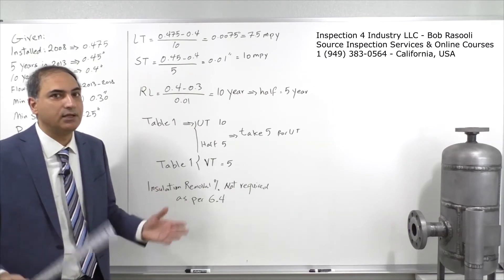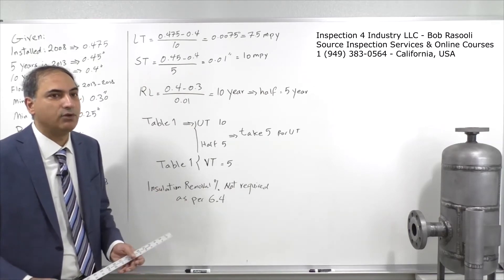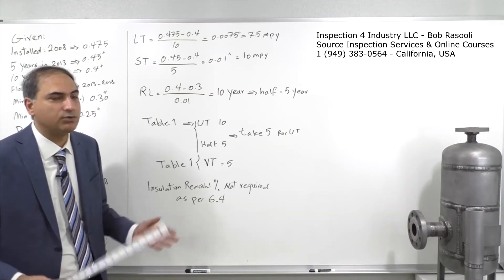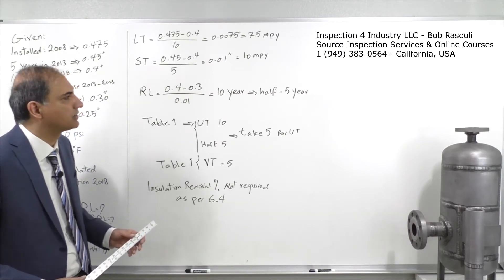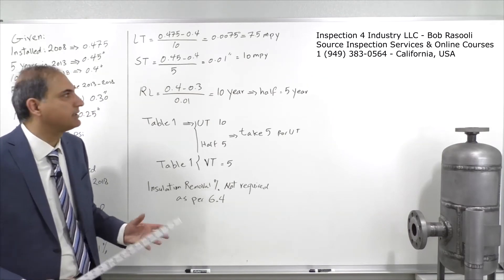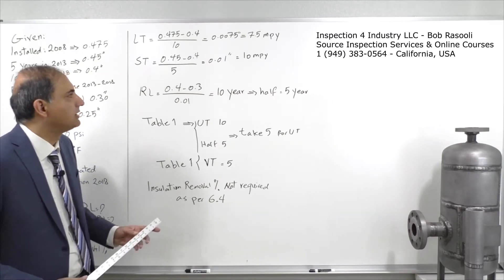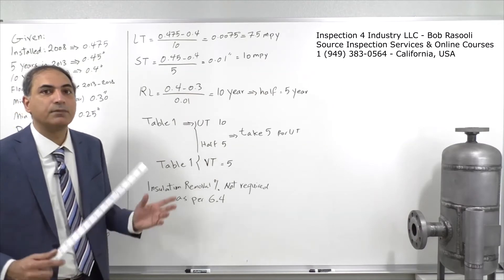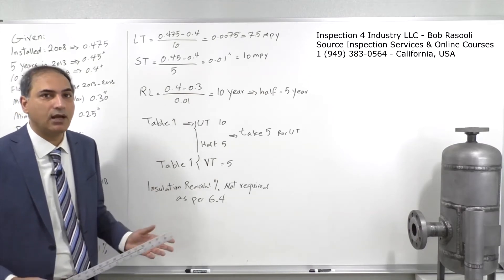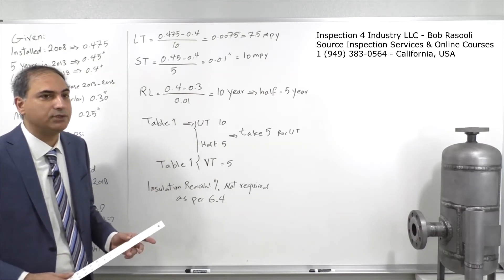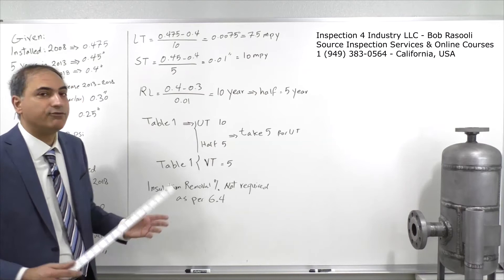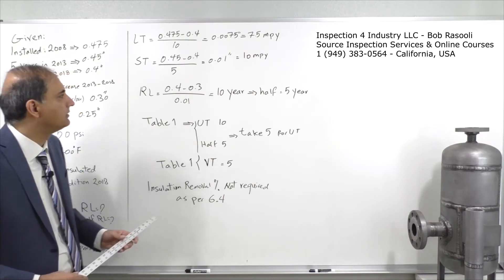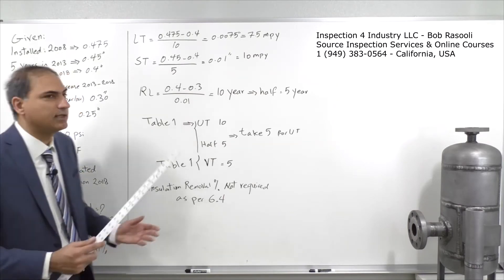The higher short-term corrosion rate is due to the high flow velocity causing a kind of erosion-corrosion in our piping system.